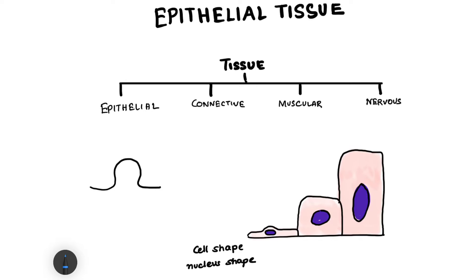Hello everyone, the Nerd Medic here. In this video we will learn about the basics of epithelial tissue. When we classify tissues, we get a broad classification of four types: epithelial tissue, connective tissue, muscular tissue, and nervous tissue.